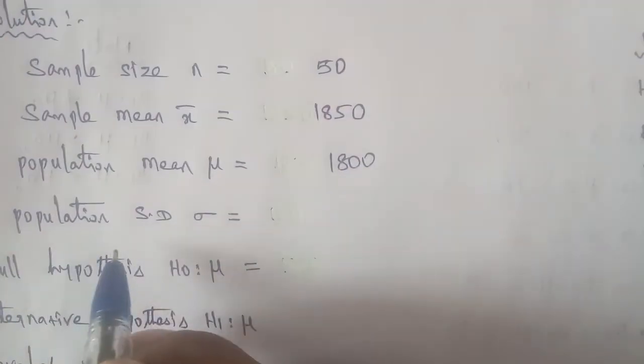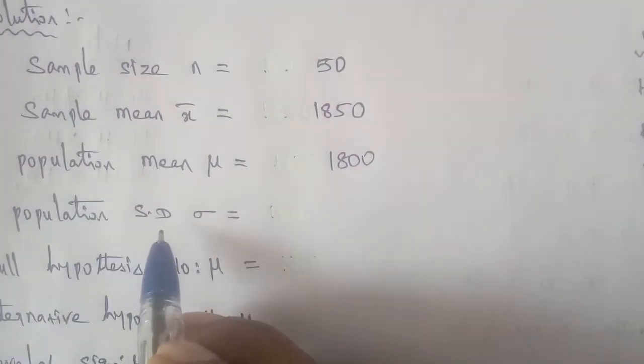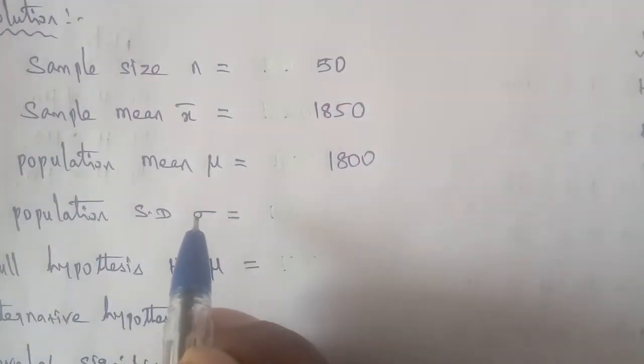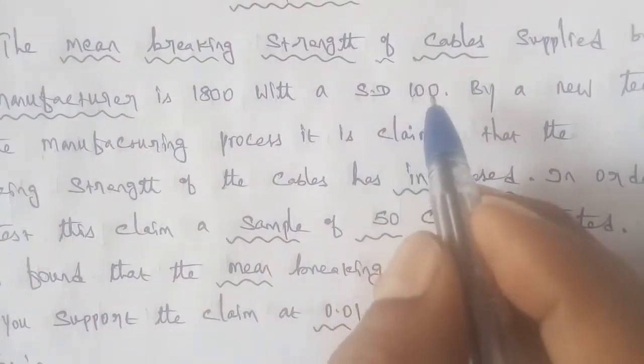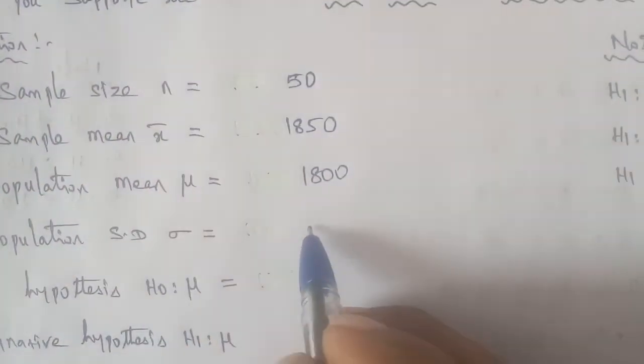Population standard deviation, symbol is sigma. Standard deviation value is 100. This is the entry of all given data.